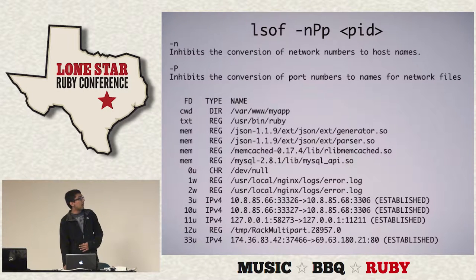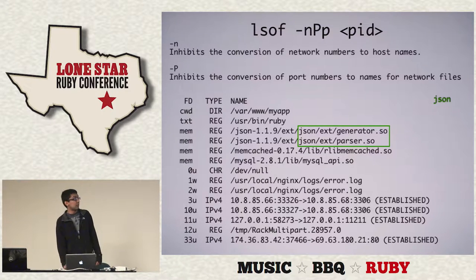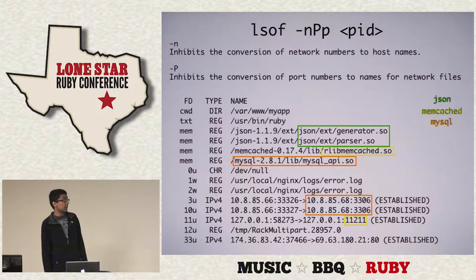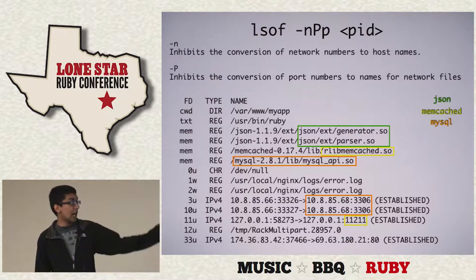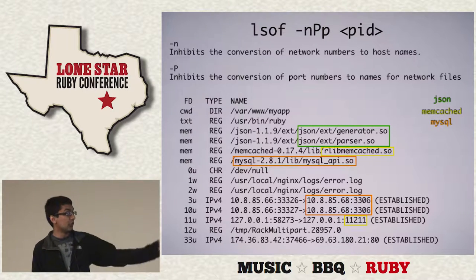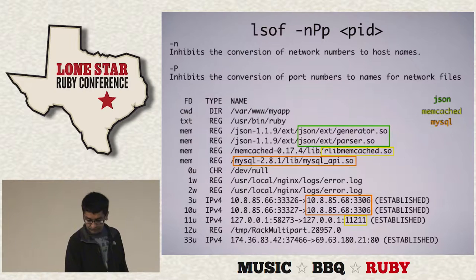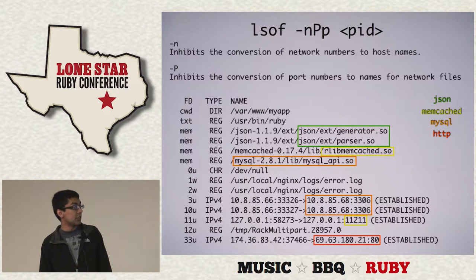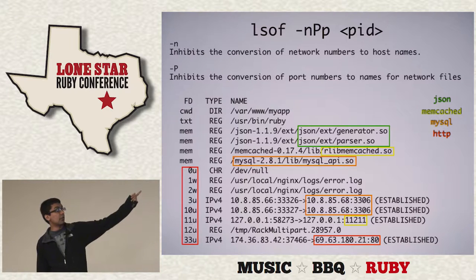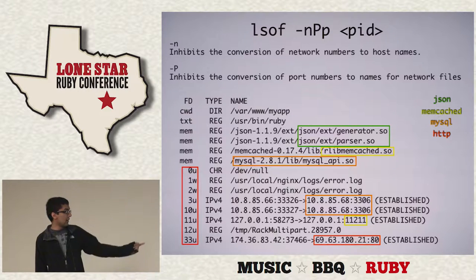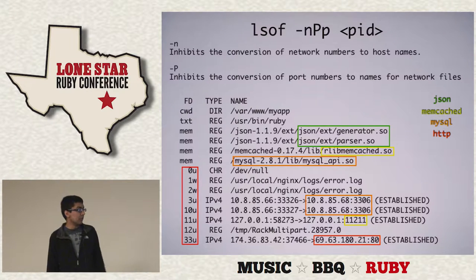When you run lsof you immediately start noticing things. You'll see it's pulling in shared libraries — the JSON library, the Memcache library, the MySQL library. It also lists all open files and open sockets. You'll see there are two connections to a MySQL server on port 3306, another connection to a Memcache server on localhost port 11211, an outgoing HTTP connection talking to some web service, the current working directory of the Rails application, stdout and stderr pointing to an Nginx error log, and a rack multipart file dealing with a file upload.